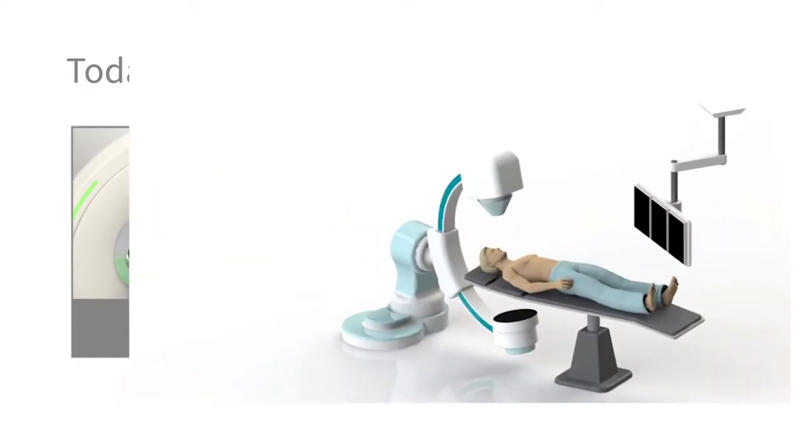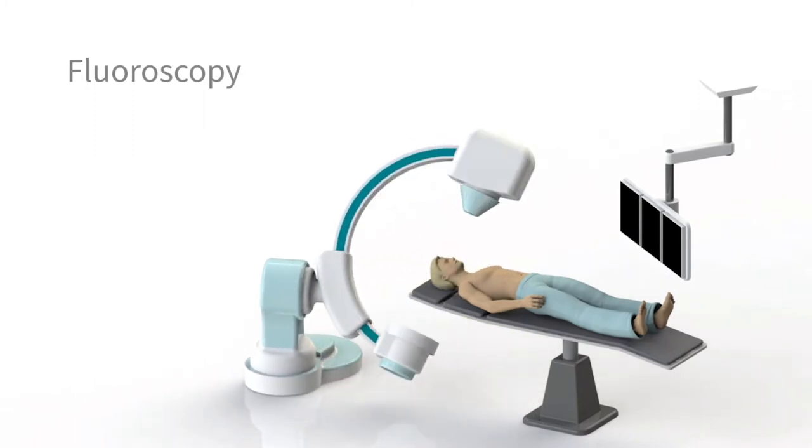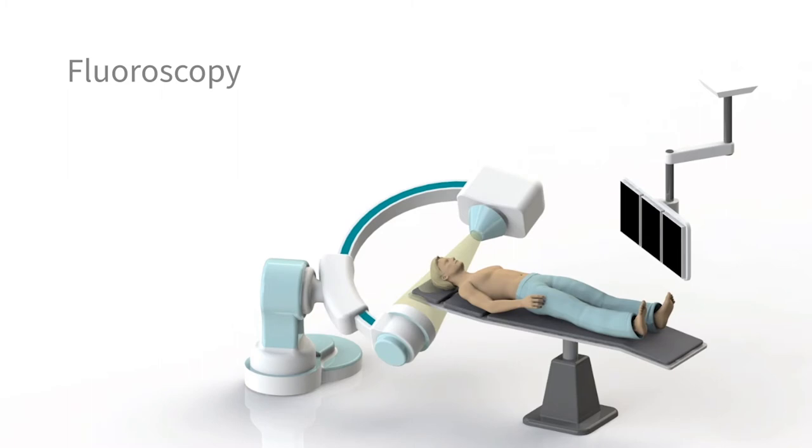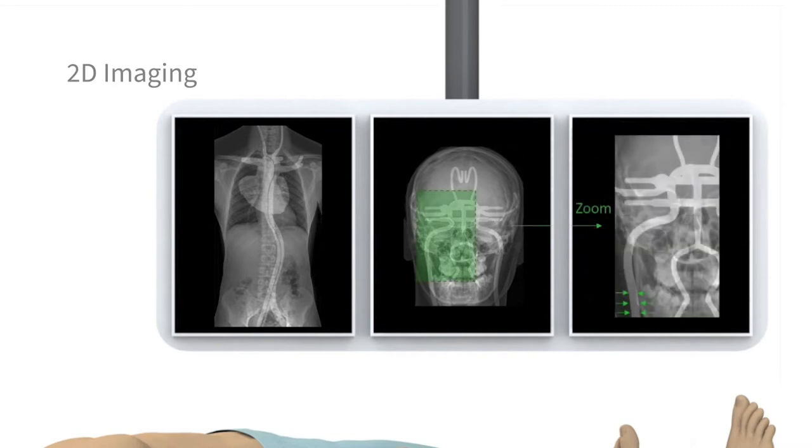On the other hand, in fluoroscopy, the intervention is guided using a C-arm system that can be positioned around a patient. Here in 2D projection images, the instruments are guided to their final position. However, due to the 2D projective nature of the imaging, the 3D spatial relationship between structures remains unclear at times.